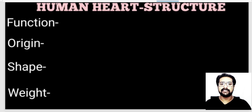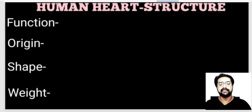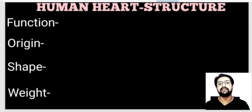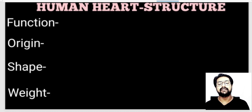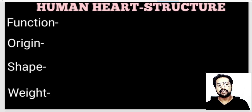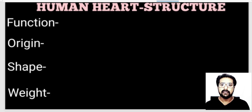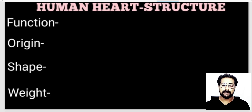One thing that strikes in our mind when we study about the human heart is: what is the functioning of the human heart? The basic function performed by the human heart — or any heart — is the circulation of blood, or the pumping of blood to the different body parts. That is why it is also known as the pumping organ of the body.